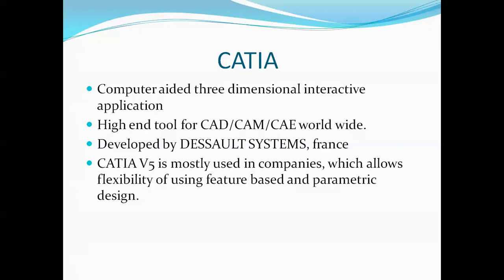CATIA V5 is mostly used among companies, which allows flexibility of using feature-based and parametric design. In my first video I explained what is parametric and non-parametric, and in this video I will also explain what is feature-based and parametric design.